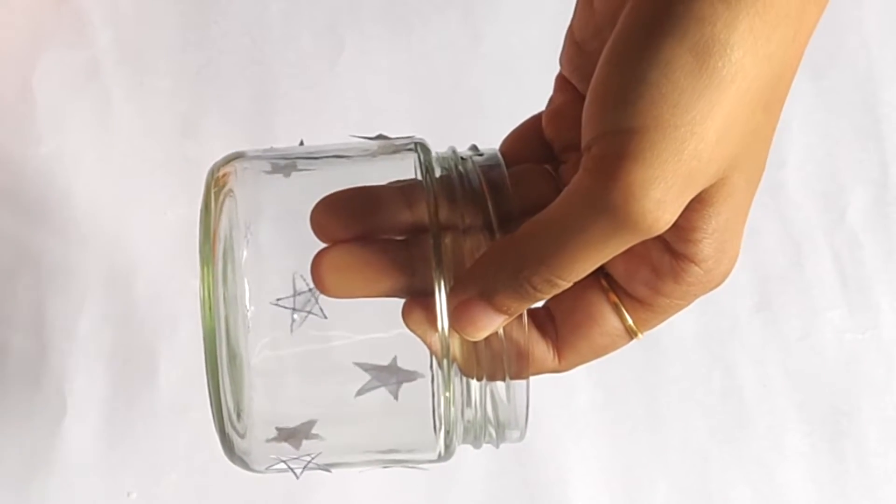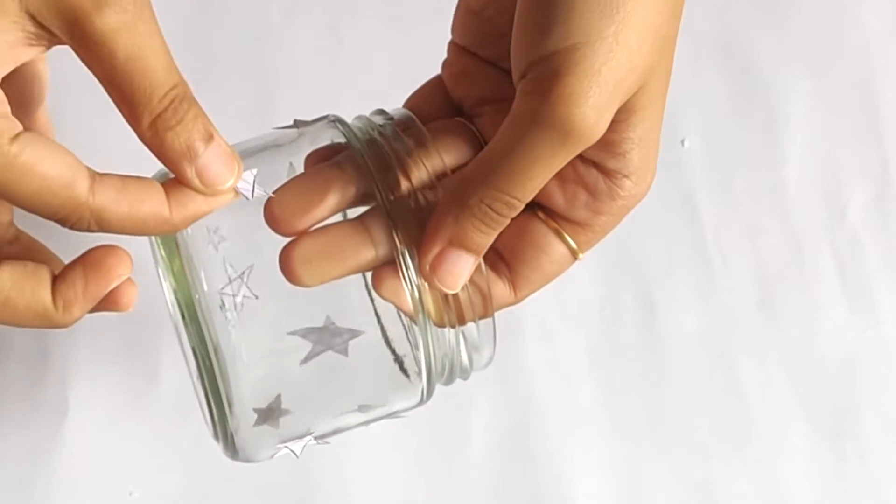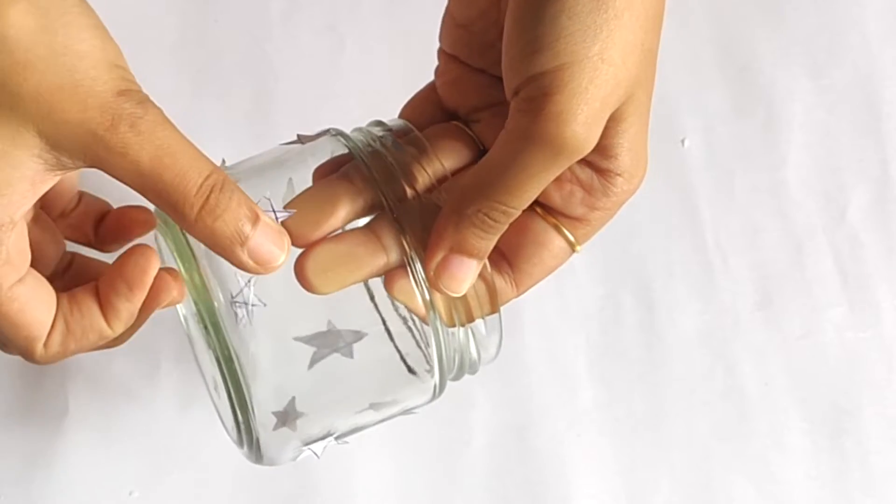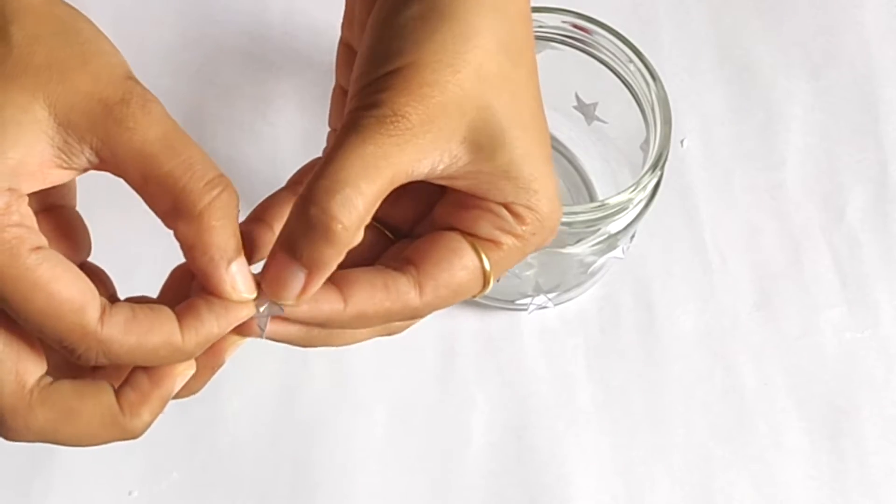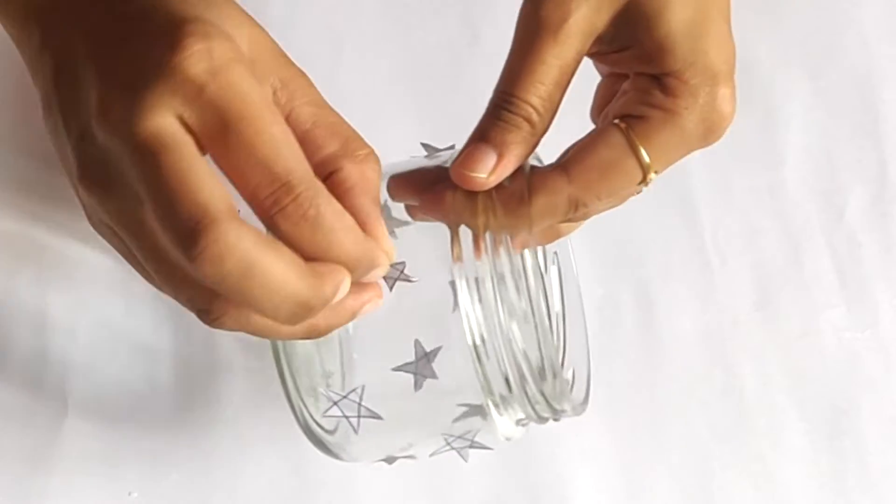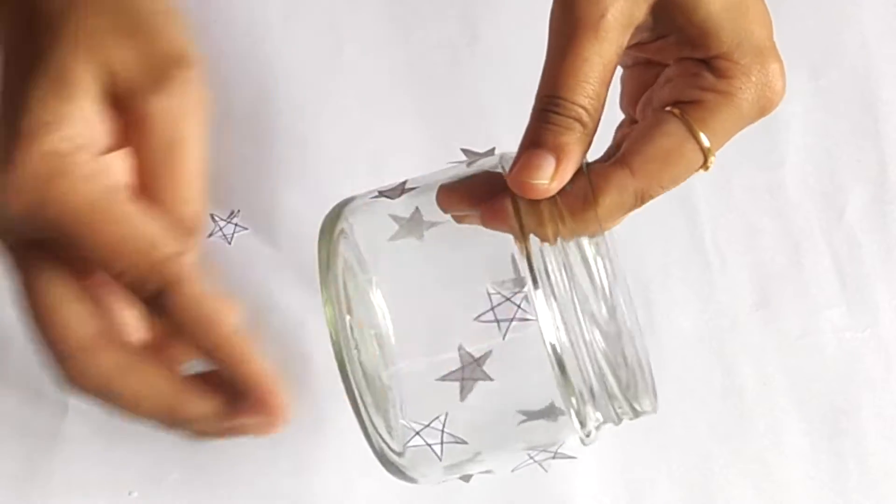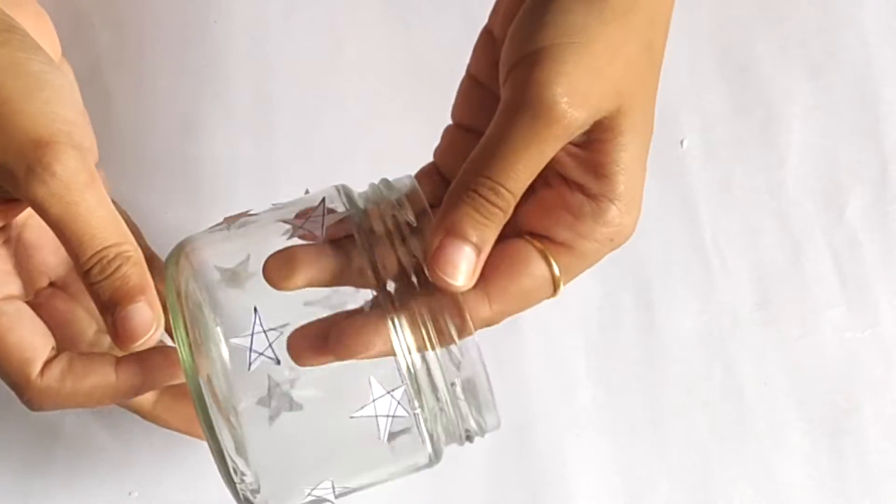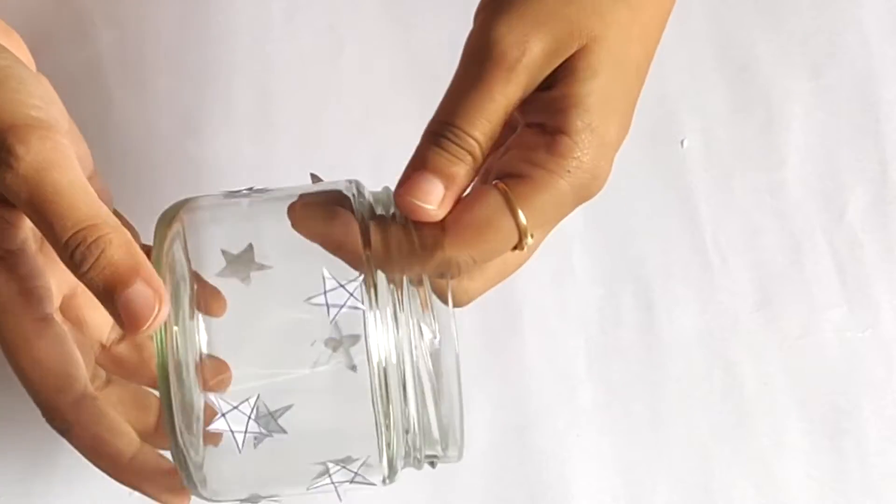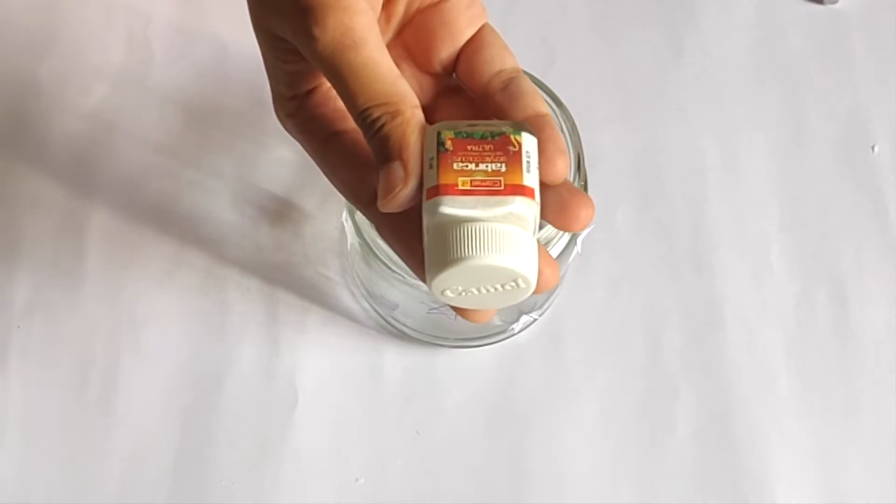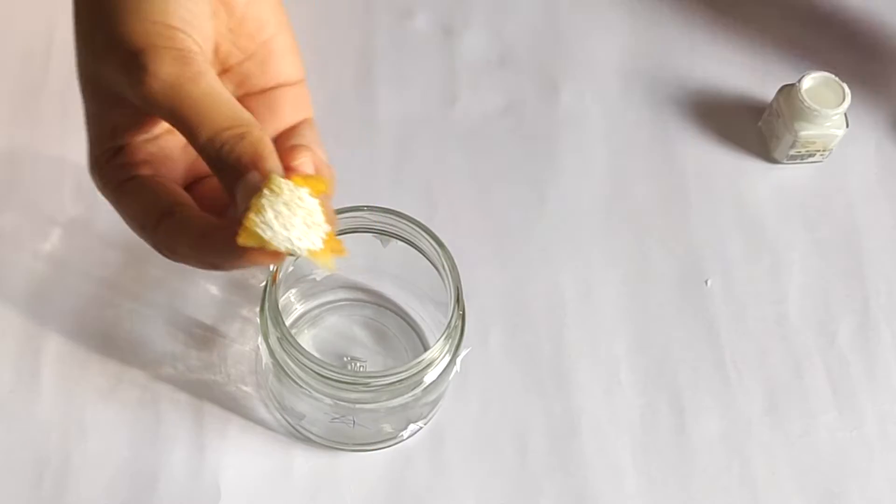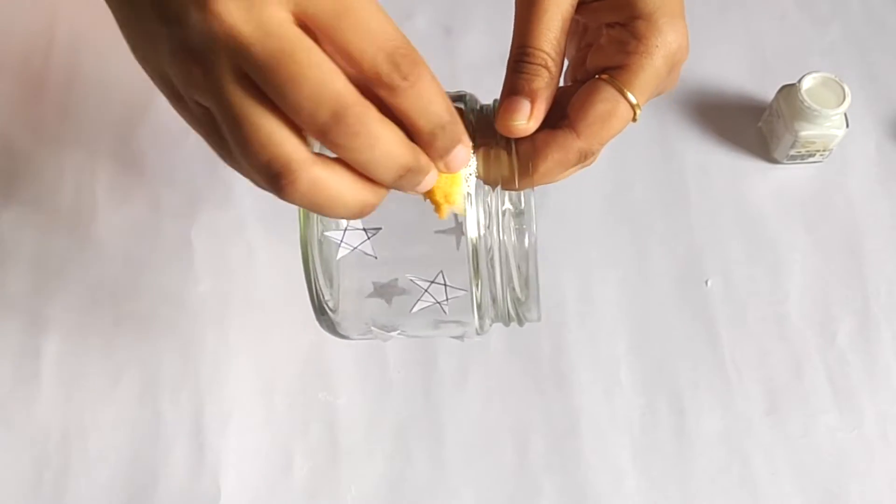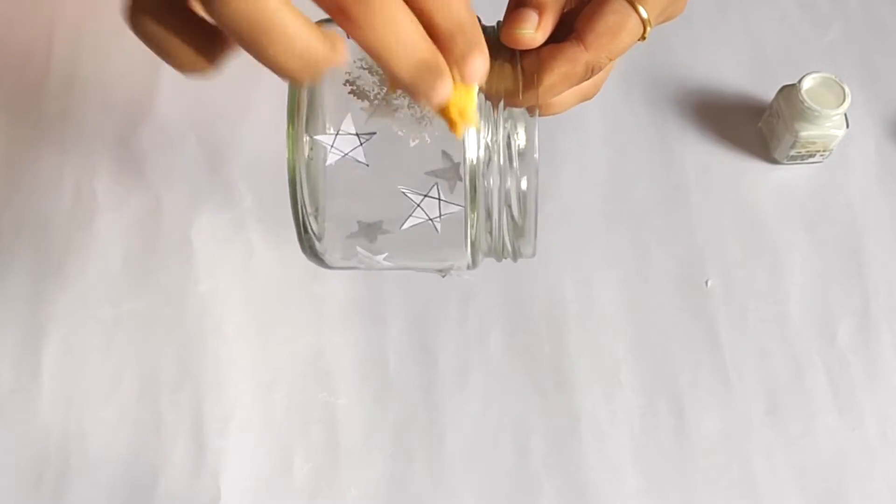Then I stuck the stars on the glass jar with tape like this. I randomly placed the stars on the jar. Then I took white acrylic color and started dabbing it with sponge all over the jar.